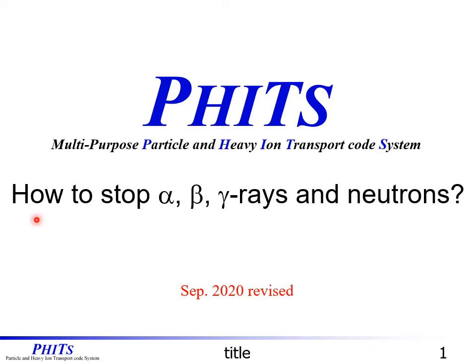We would like to start Exercise 1. The title is 'How to Stop Alpha, Beta, Gamma Rays and Neutrons.'